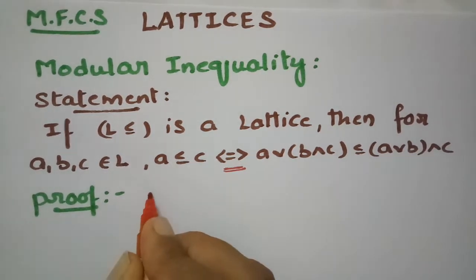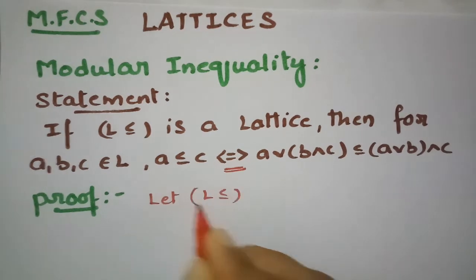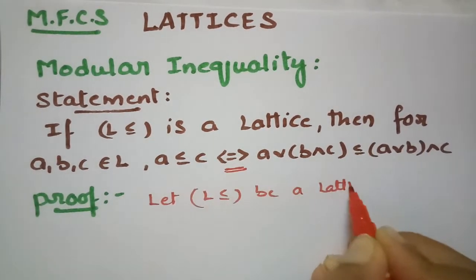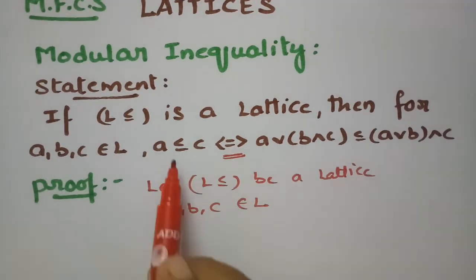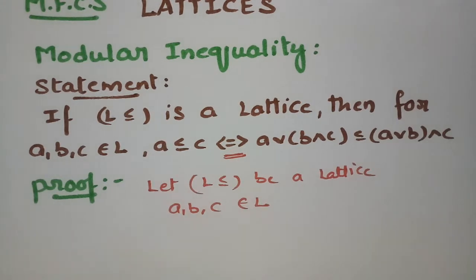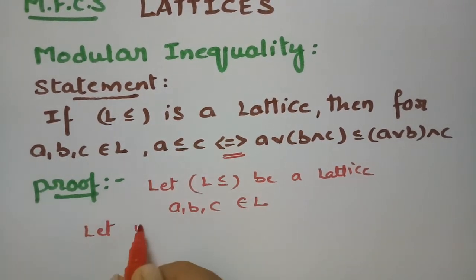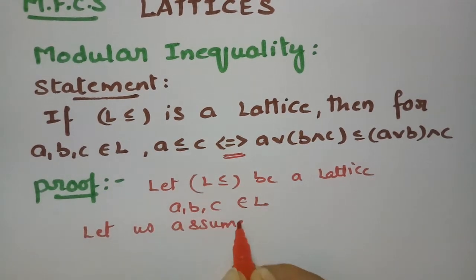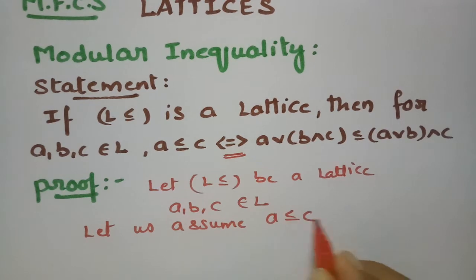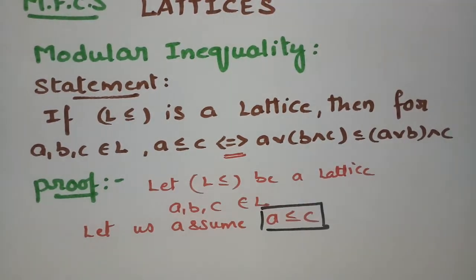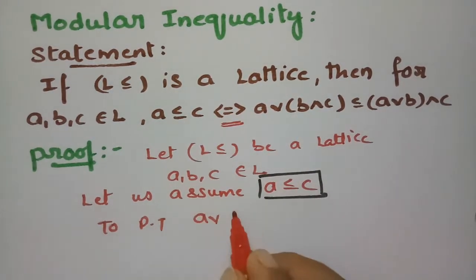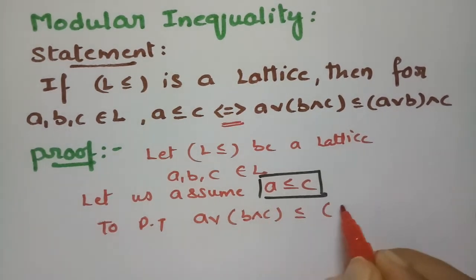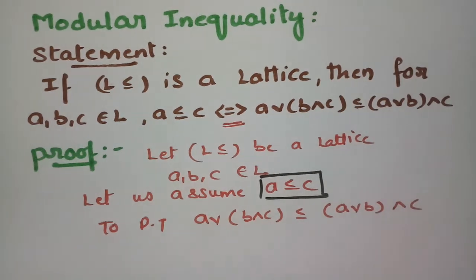So what is given: first of all, let (L, ≤) be a lattice. This is given, and A, B, C belong to the set L. Our assumption is: let us assume A ≤ C. This is assumed, and now to prove the inequality A∨(B∧C) ≤ (A∨B)∧C.